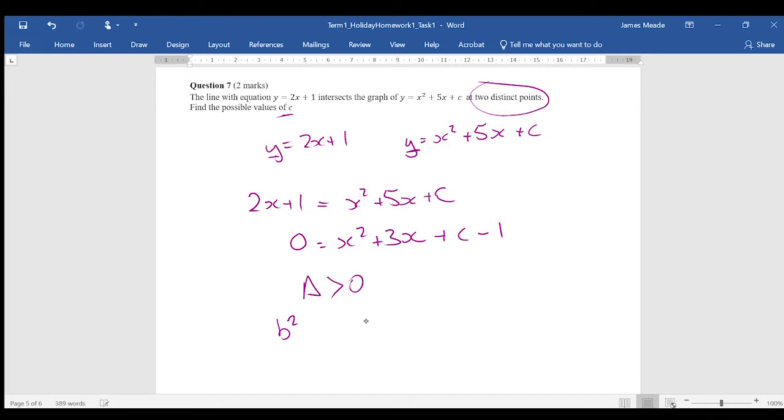If we use the discriminant formula b squared minus 4ac, in this instance a will be 1, b will be 3, and c will be c minus 1. So we're going to try and solve when all that is greater than 0.